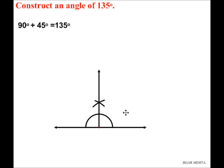Once you've constructed the angle of 90 degrees, you just have to add an angle of 45 degrees on one side of your existing 90 degrees which gives you 135 degrees. So I'm going to add 45 degrees on this side.